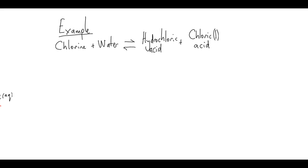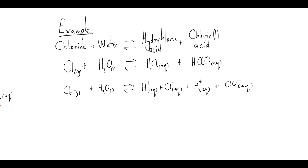The next example is a key equation from inorganic chemistry: the reactions of chlorine. Chlorine reacts with water to form hydrochloric acid (AQ) and chloric(I) acid (AQ). Splitting the aqueous species into their ions: HCl becomes H+ and Cl−, and chloric(I) acid becomes H+ and the chlorate(I) ion, ClO−.